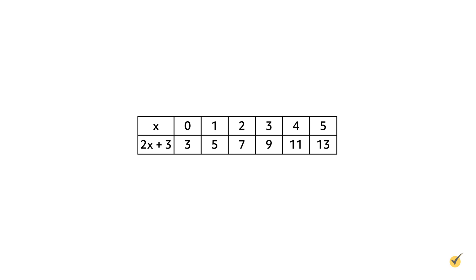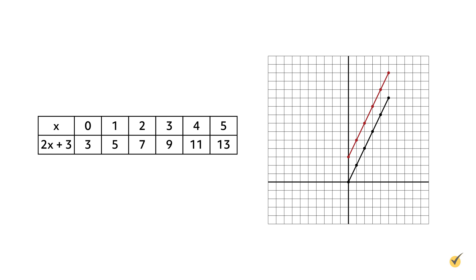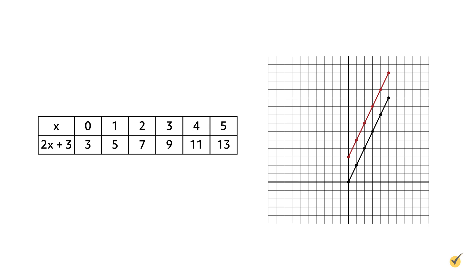For instance, the translation f moves the graph 3 units up. Applied to our original function f(x) equals 2x, the equation would read f(x) equals 2x plus 3. Since the graph shifts 3 units up, the y-coordinate of the origin point increases by 3. Creating a table reflecting this function, the ordered pairs are: 0,3; 1,5; 2,7; 3,9; 4,11; and 5,13. Each point in the new function 2x plus 3, shown in red, is 3 units higher than the original function 2x, shown in black.